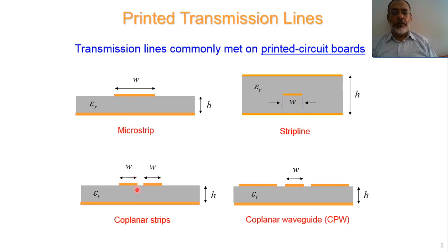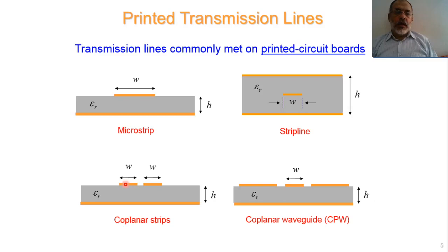Another configuration is the coplanar stripline, where two parallel wires are both printed on a grounded dielectric slab, such that one is positive and the other is negative in DC terms, and the electric field between the two signals is between these two strips. Another configuration is the coplanar waveguide.